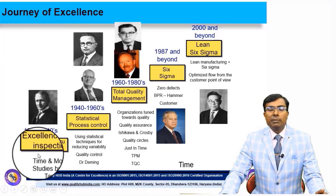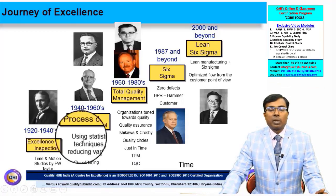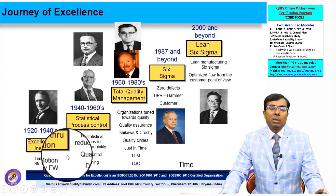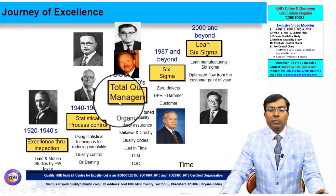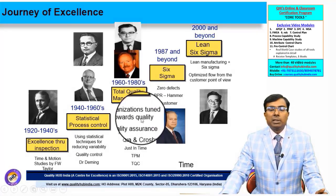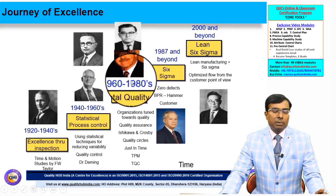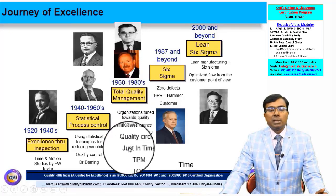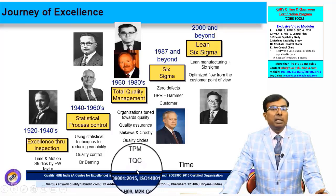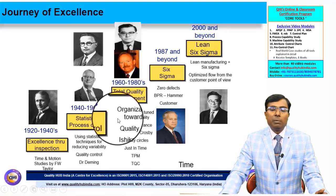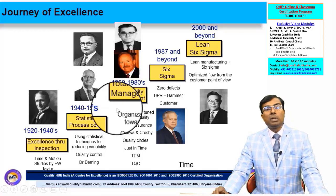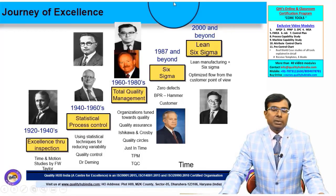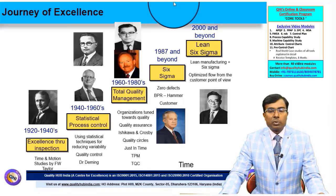We can see a clear evolution: the early period focused on inspection, then the focus moved to quality control, and later to quality assurance and total quality management. Other concepts that also evolved during this period include quality circles, just-in-time, TPM, and total quality control. There were also many concepts pertaining to lean manufacturing that evolved and were later used during Six Sigma projects.